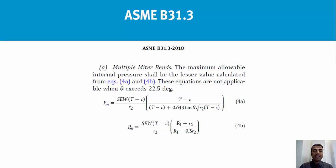Based on clause A of paragraph 304.2.3, the maximum allowable internal pressure Pm shall be the lesser value calculated from equations 4a and 4b. These equations are not applicable when theta exceeds 22.5 degrees. Therefore we should calculate Pm using both formulas and consider the lesser value as Pm.